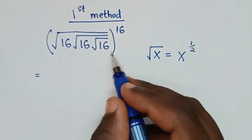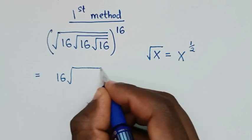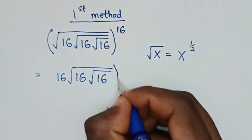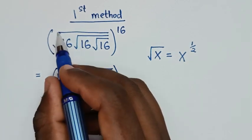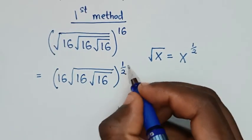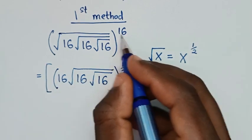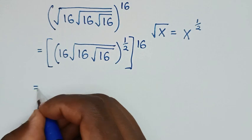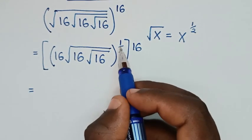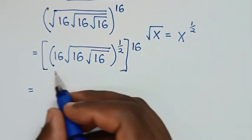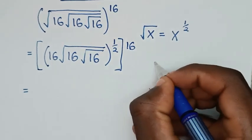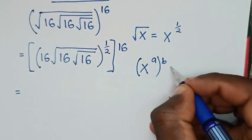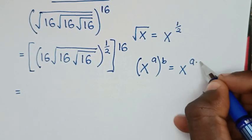So it will be: 16, square root of 16, square root of 16, bracket — this square root here is the same as power of a half — then bracket, this power of 16. This is in the form of x power of a, bracket, power of b, which is equal to x power of a times b.